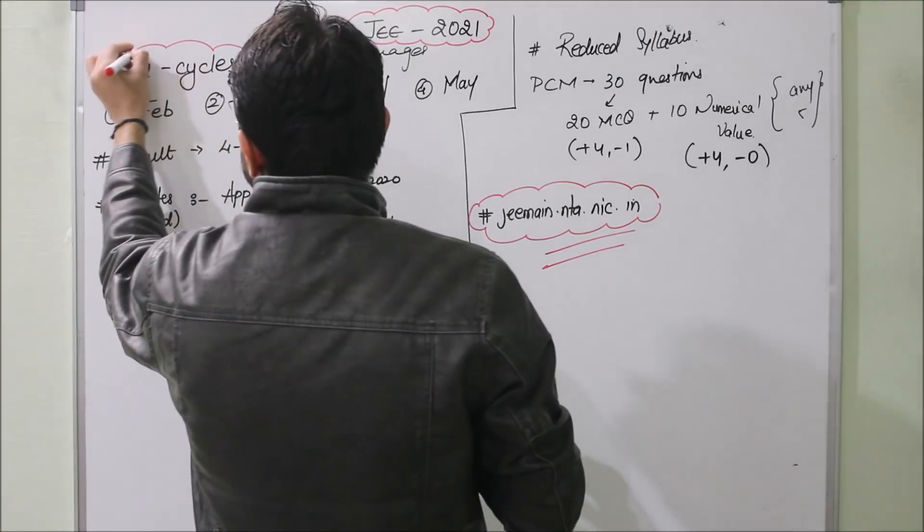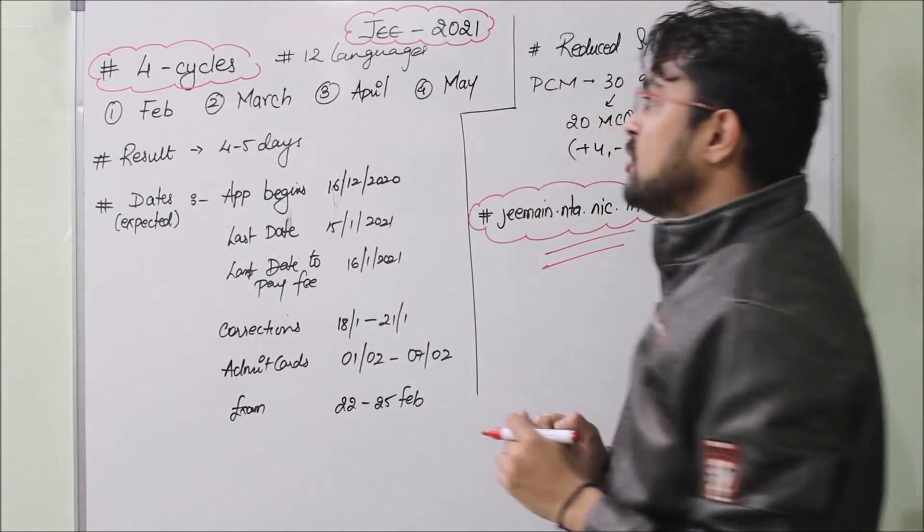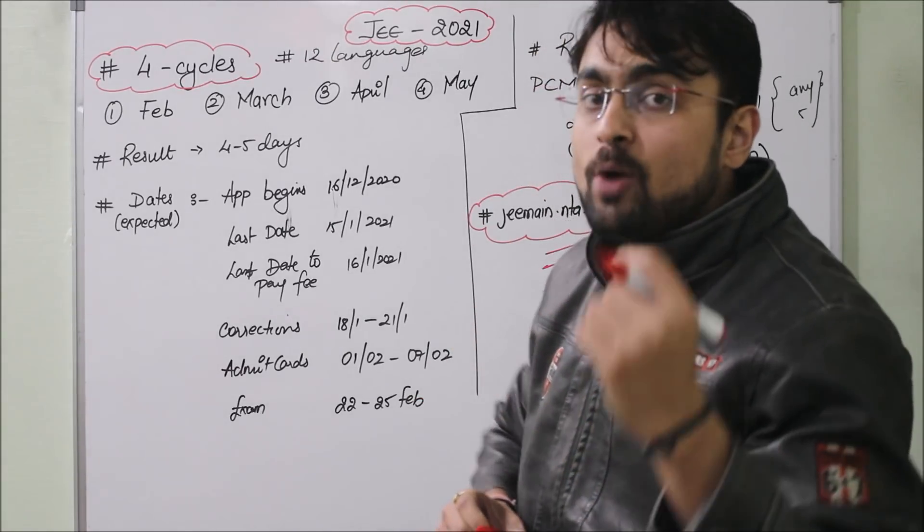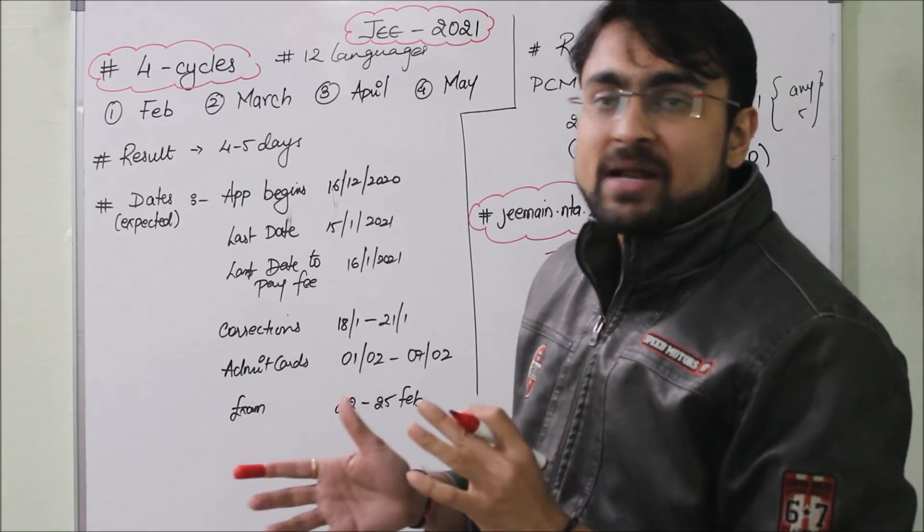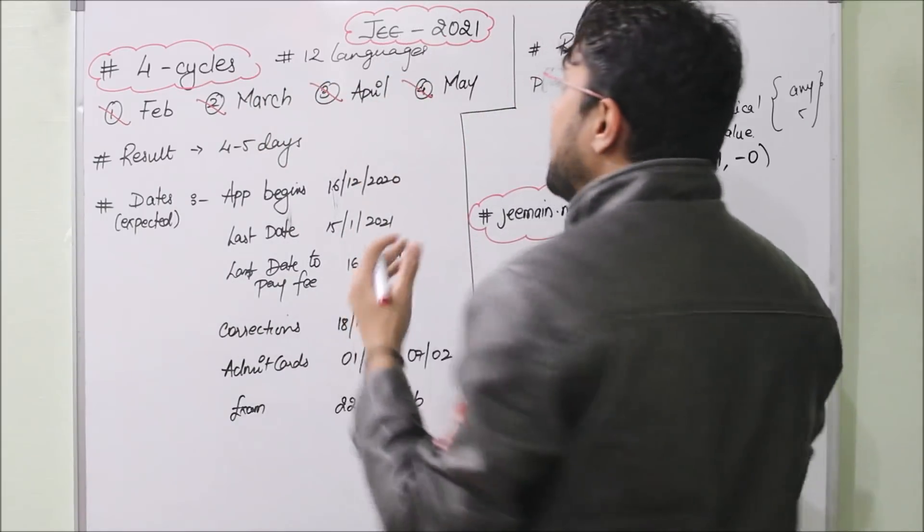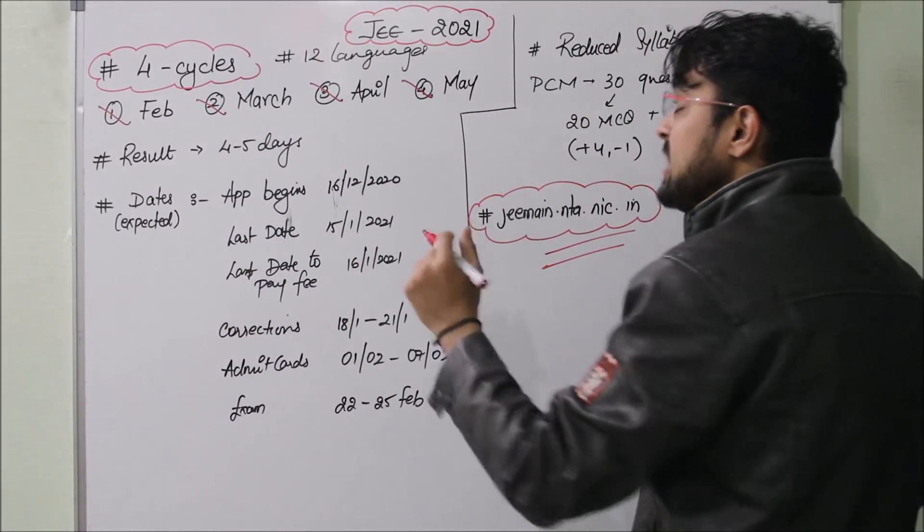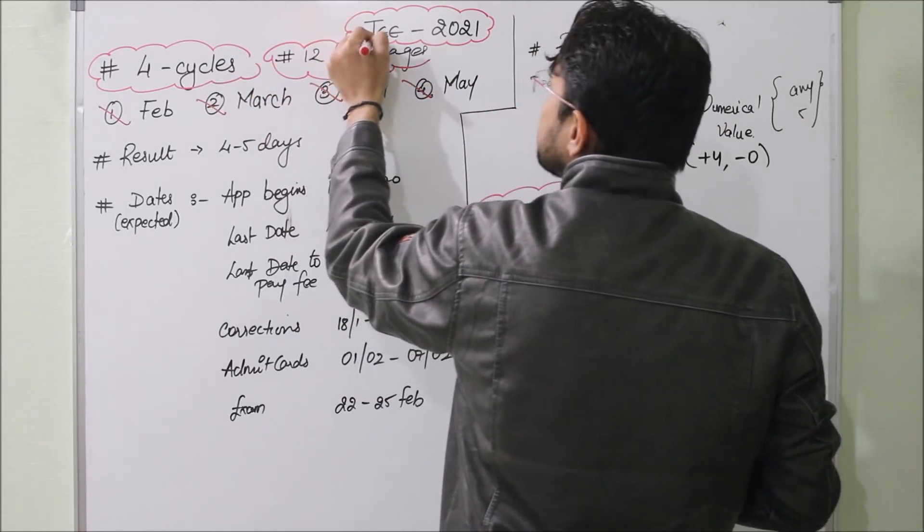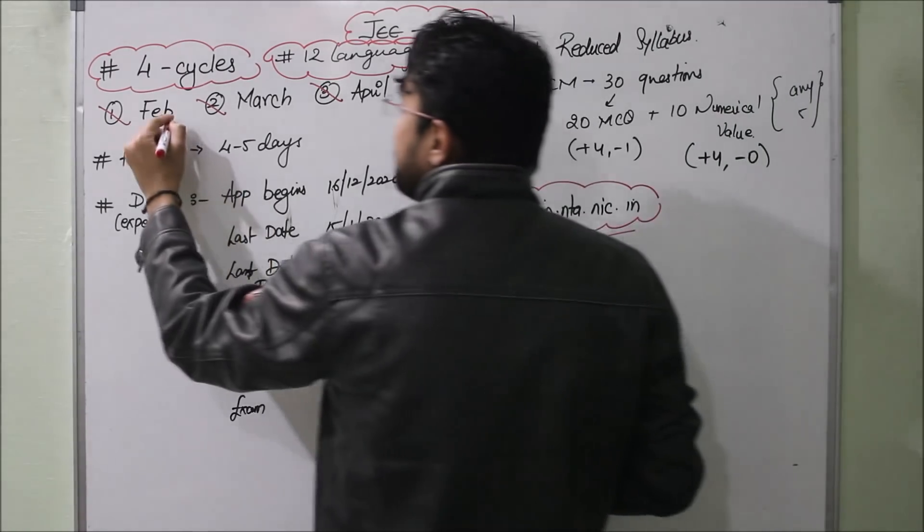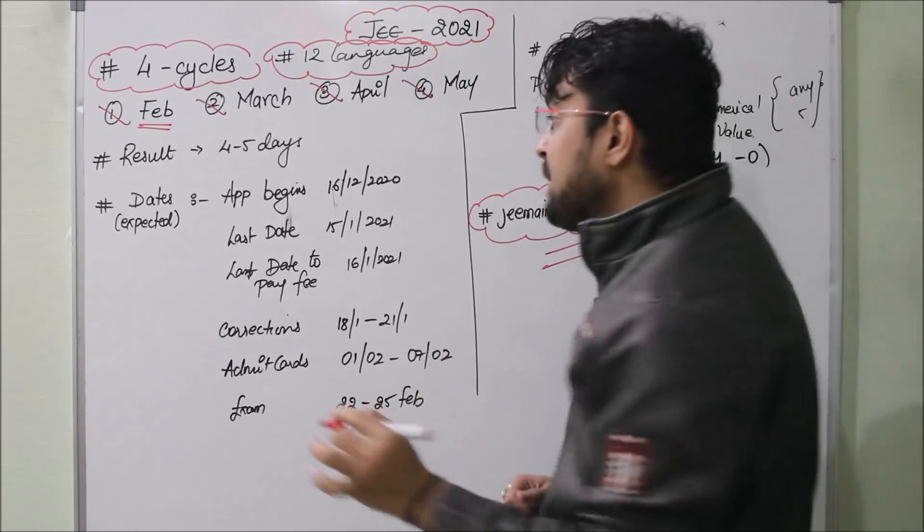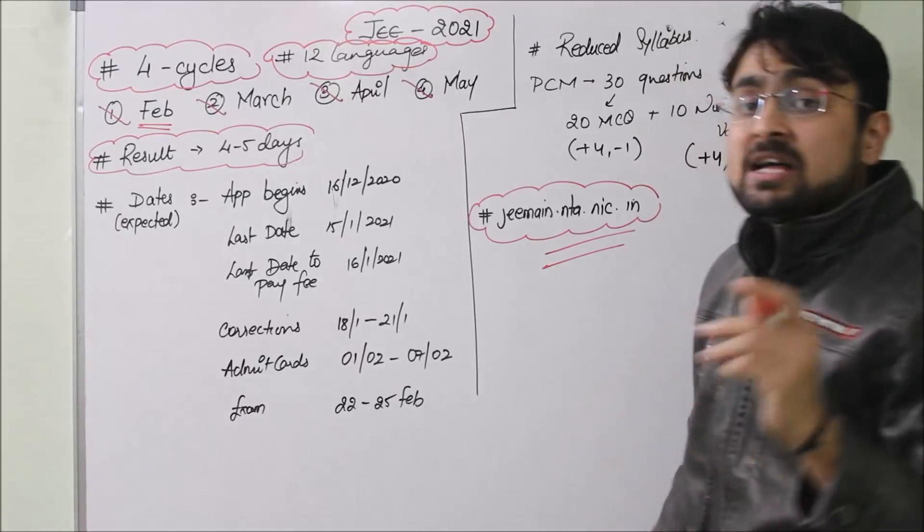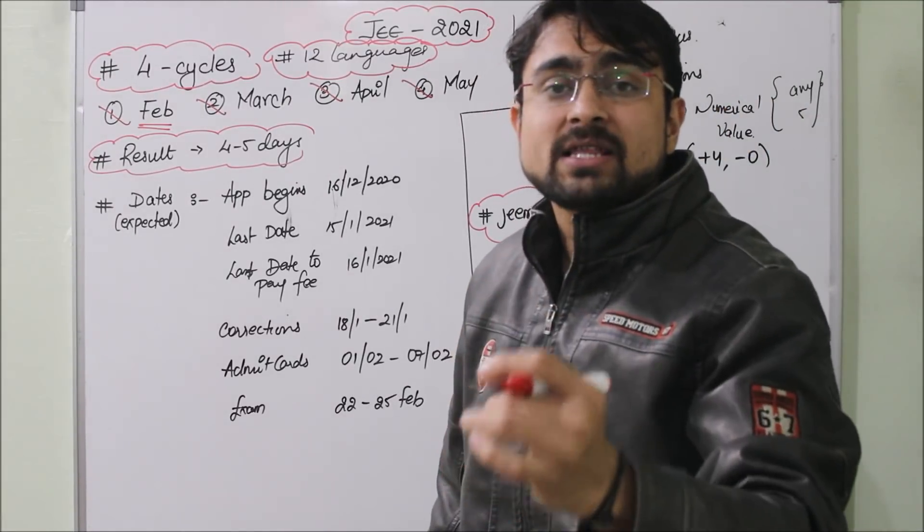Guys, JEE Main will be in 4 cycles. This means you can give JEE Main exam 4 times - in January, February, March, and April. Every month this exam will be conducted. This time the exam will be set in 12 different languages. If you are sitting in February, then your results will be given in 4-5 days, so if the child wants, they can apply for next month.